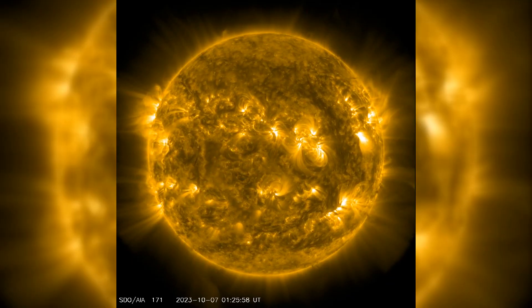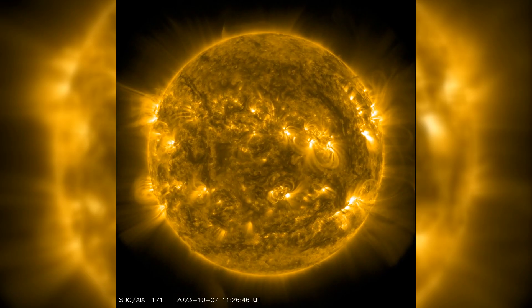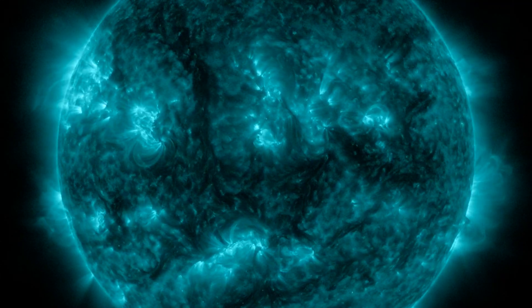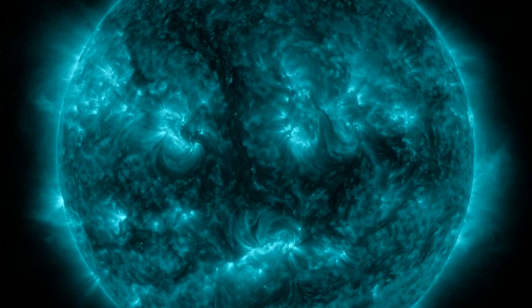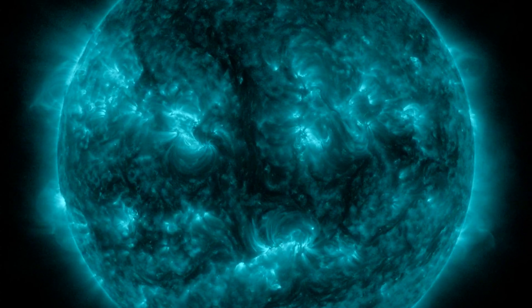Looking ahead, the sun is expected to maintain its cool demeanor. However, keep an eye out for the possibility of isolated M-class flares, bringing along minor to moderate radio blackouts from October 7th to 9th.